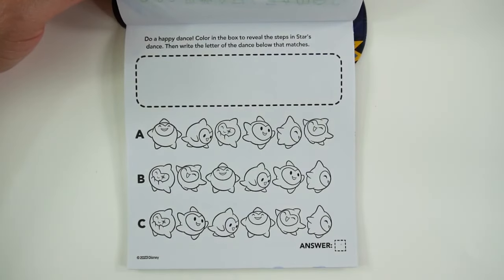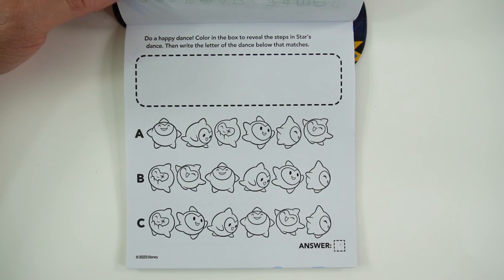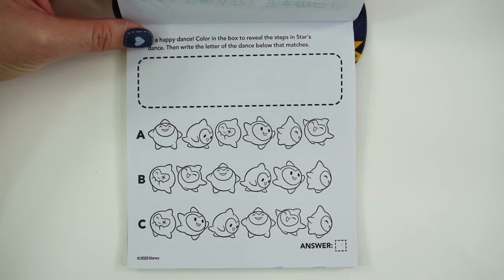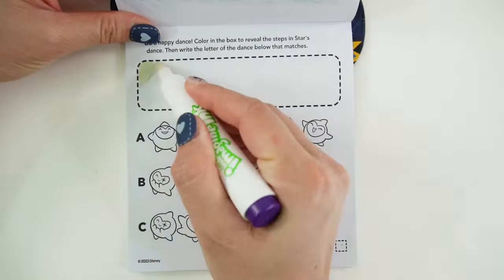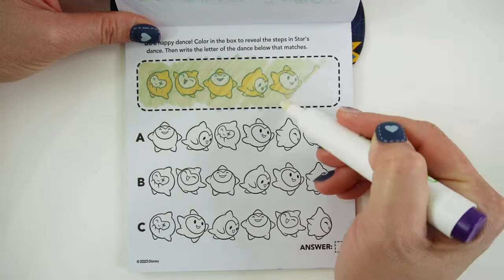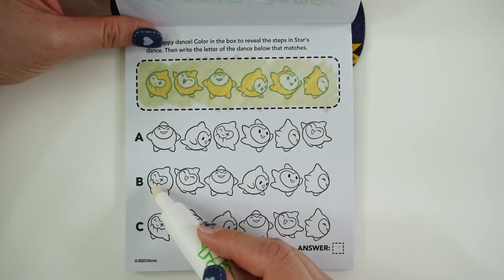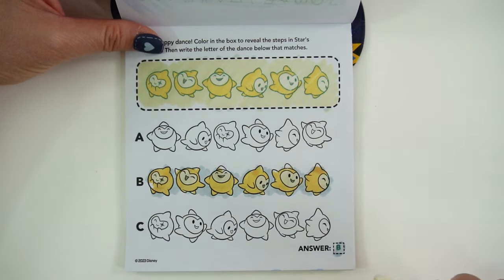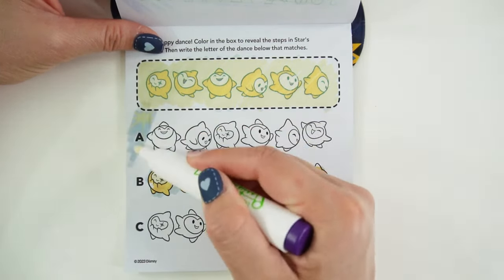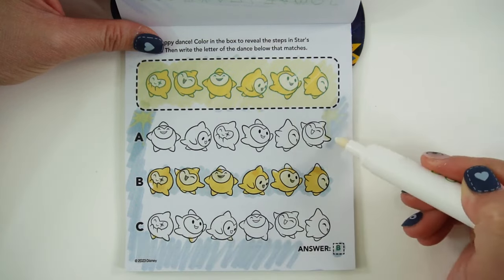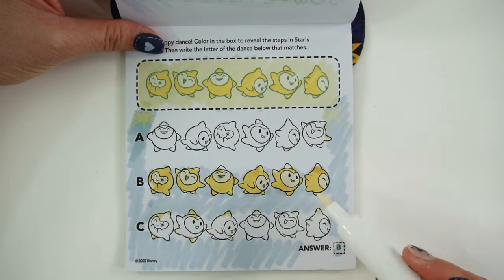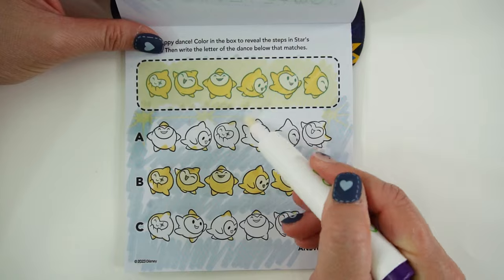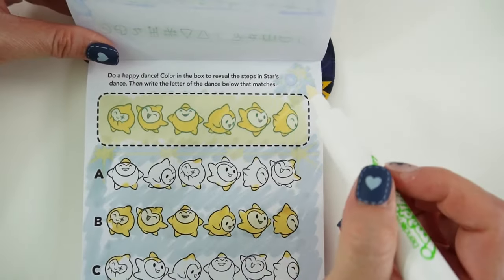All right, do a happy dance. Color in the box to reveal the steps in star's dance. Then write the letter of the dance below that matches. It totally matches this one. We did it. So now where's the wish? The wish is up here.